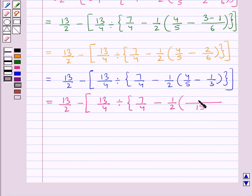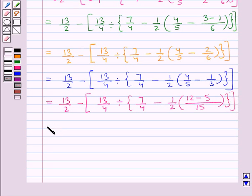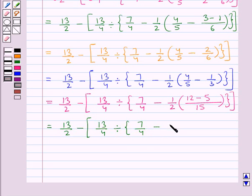5 times 3 is 15 and 3 multiplied by 4 is 12, minus 3 times 5 is 15 and 5 multiplied by 1 is 5. So the parenthesis gives 12/15 minus 5/15, which equals 7/15. Round bracket closes, curly bracket closes, square bracket closes.